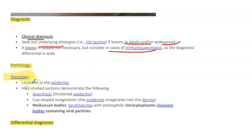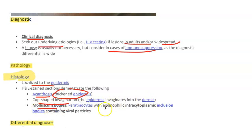Pathology: it is usually localized to the epidermis. Findings include acanthosis, cup-shaped invagination of the epidermis into the dermis, and molluscum bodies, which are keratinocytes with eosinophilic intracytoplasmic inclusion bodies containing viral particles.